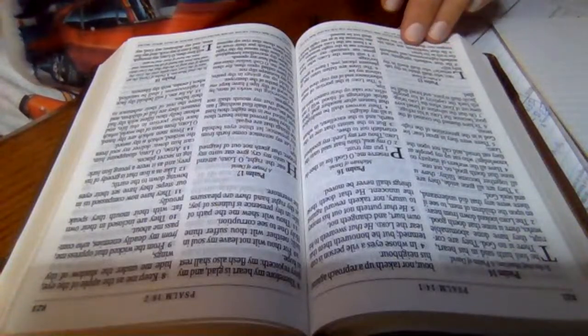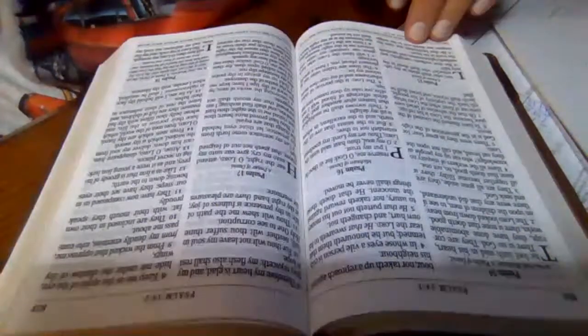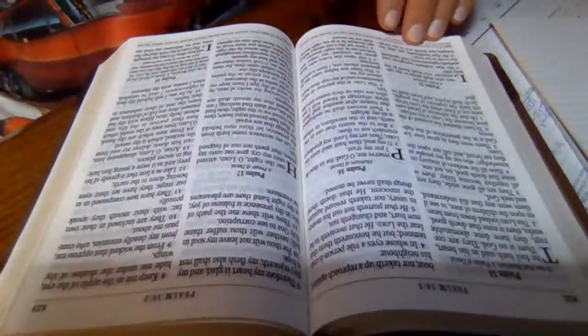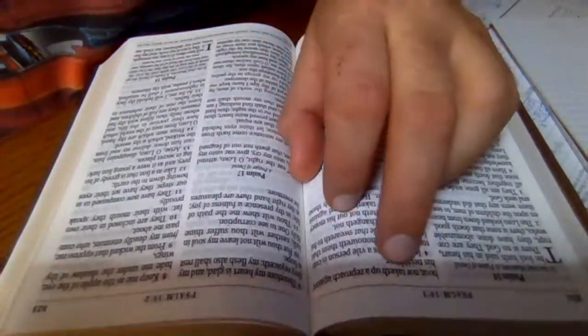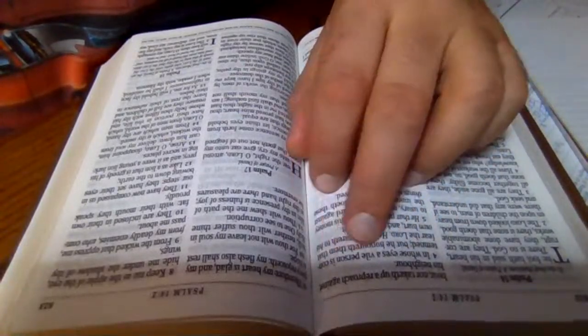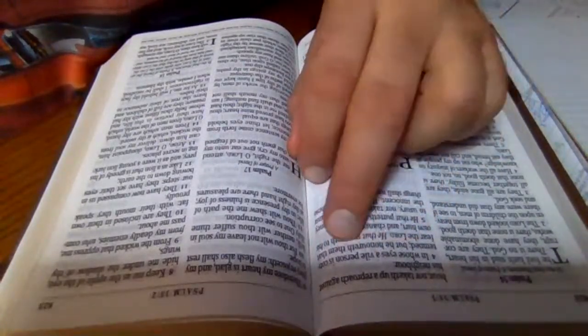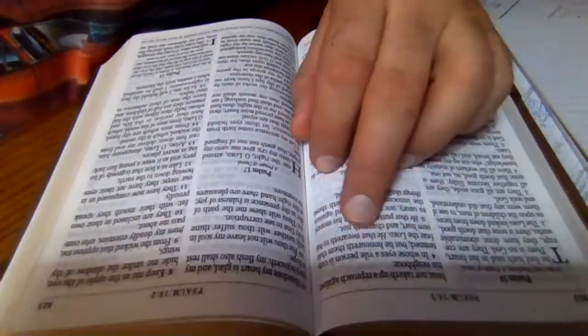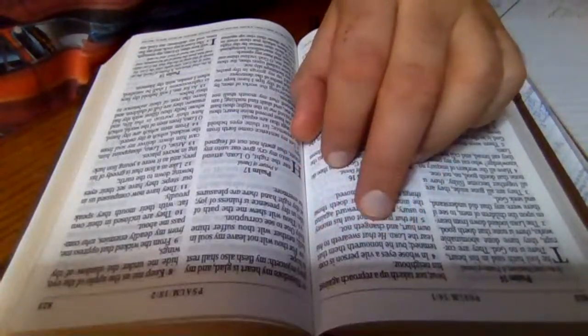He that walketh uprightly and worketh righteousness and speaketh the truth in his heart. He that backbiteth not with his tongue, nor doeth evil to his neighbor, nor taketh up a reproach against his neighbor. In whose eyes a vile person is contemned, but he honoreth them that fear the Lord. He that sweareth to his own hurt and changeth not.